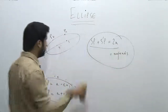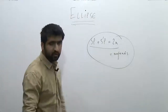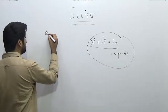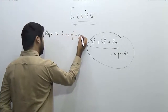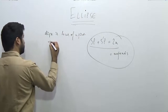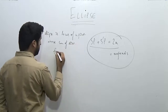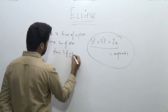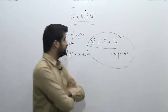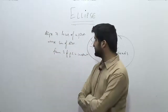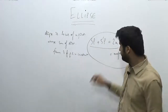So the sum of these two distances comes out to be 2a. Now we can write a new definition of ellipse: an ellipse is the locus of a point whose sum of distances from two fixed points is constant. That is, the ellipse is the locus of such a point whose sum of distances from two fixed points is equal to a constant, and that constant is equal to 2a.